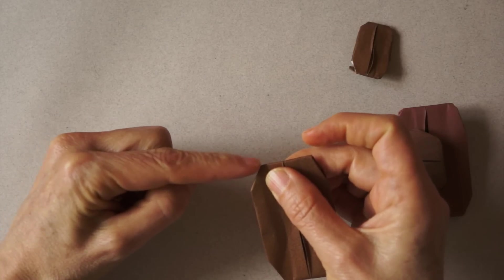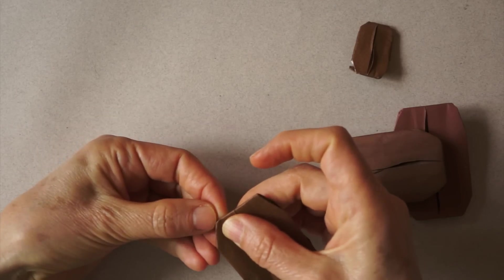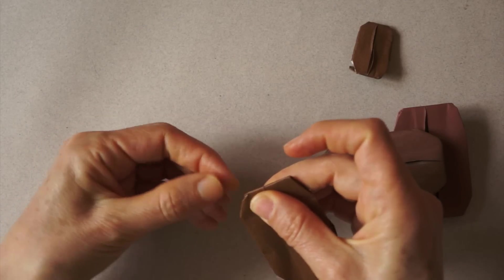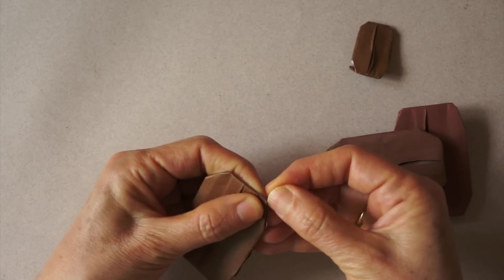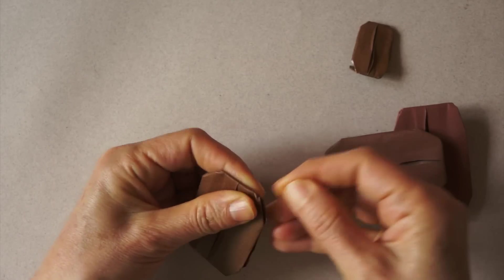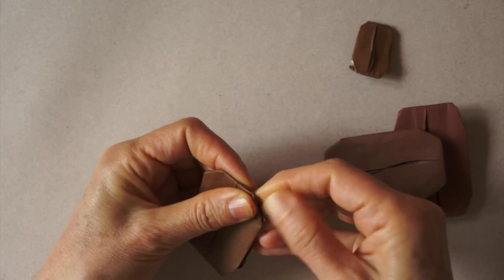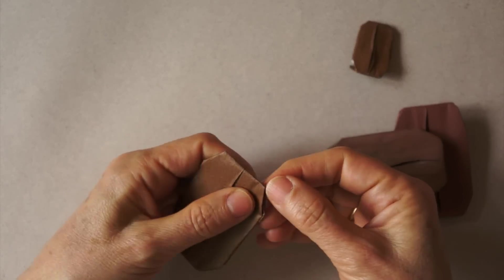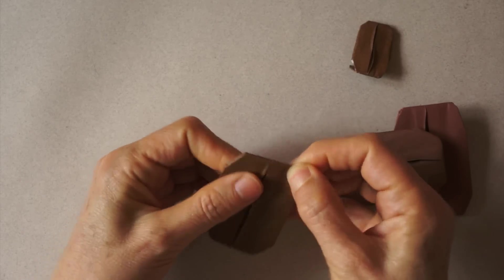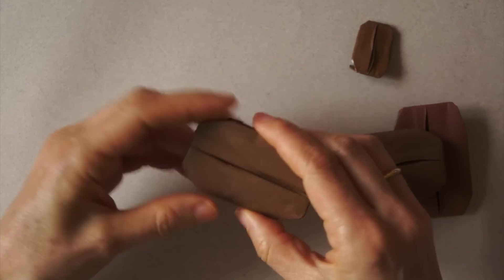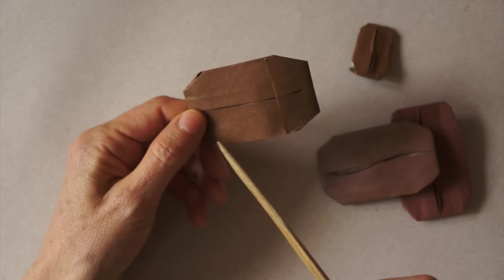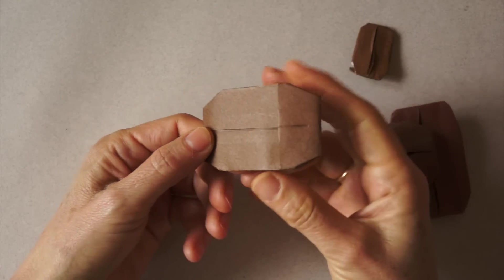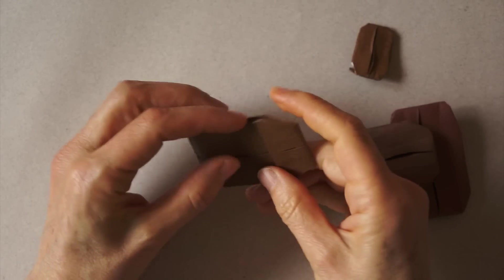We can round these tips just by folding in with the fingernail. On the back we can round a little bit here and here to make it three-dimensional.